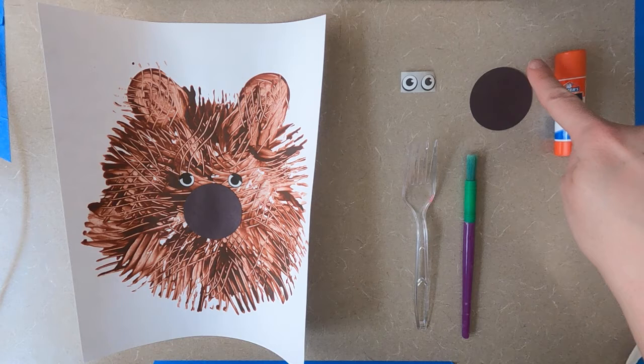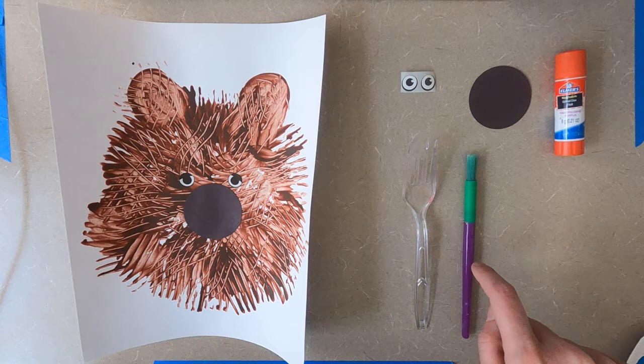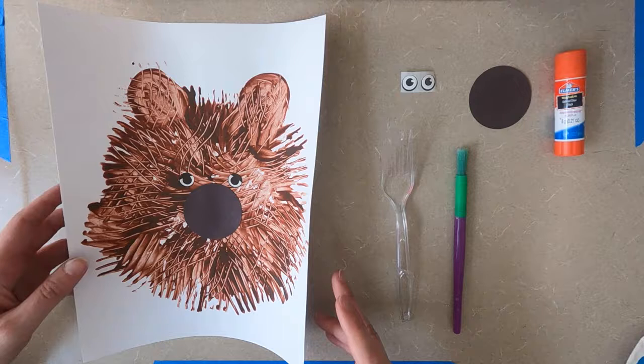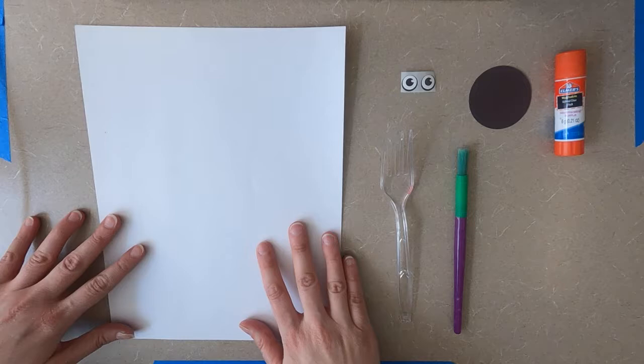You'll need some sticker eyes, a black circle for the nose, some glue to put the nose on the bear, a fork, a paintbrush, and obviously a piece of paper and some brown paint. So let's get started.